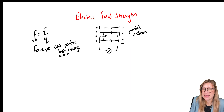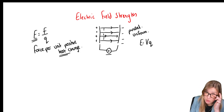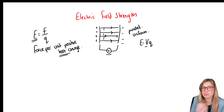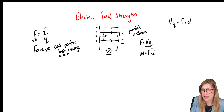We can prove this because if we have a potential difference between the two plates, we know that energy equals VQ — the potential difference times the charge. We also know that work done equals force times distance. Both of these are equal to an energy measured in joules.